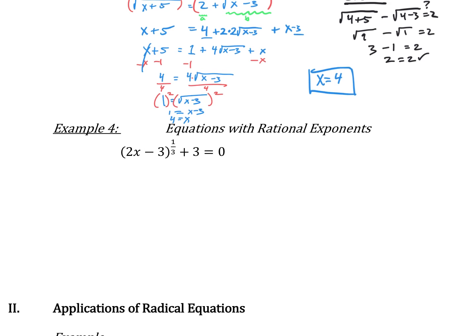Those are radical equations. What if we have a rational exponent? Remember, a rational exponent of 1/3 really means the cube root. So you can write it out as the cube root of 2x minus 3 and then cube both sides — that would totally work.